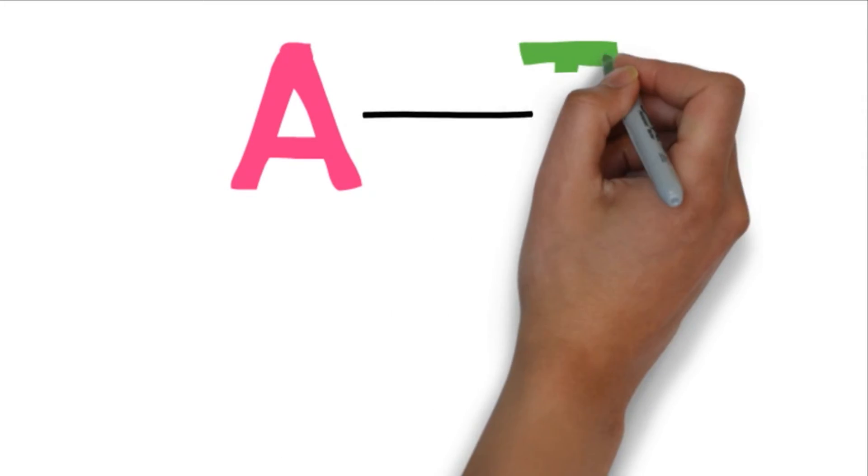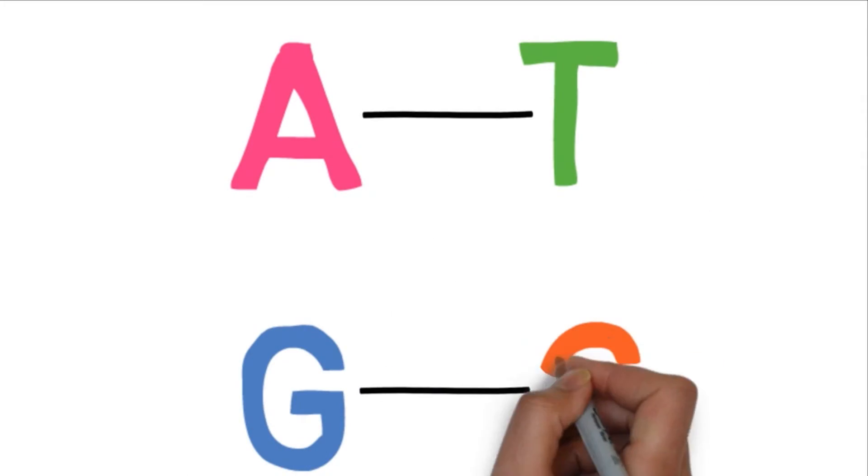The bases which make up DNA each have a buddy it always pairs with. A pairs with T, and G pairs with C.